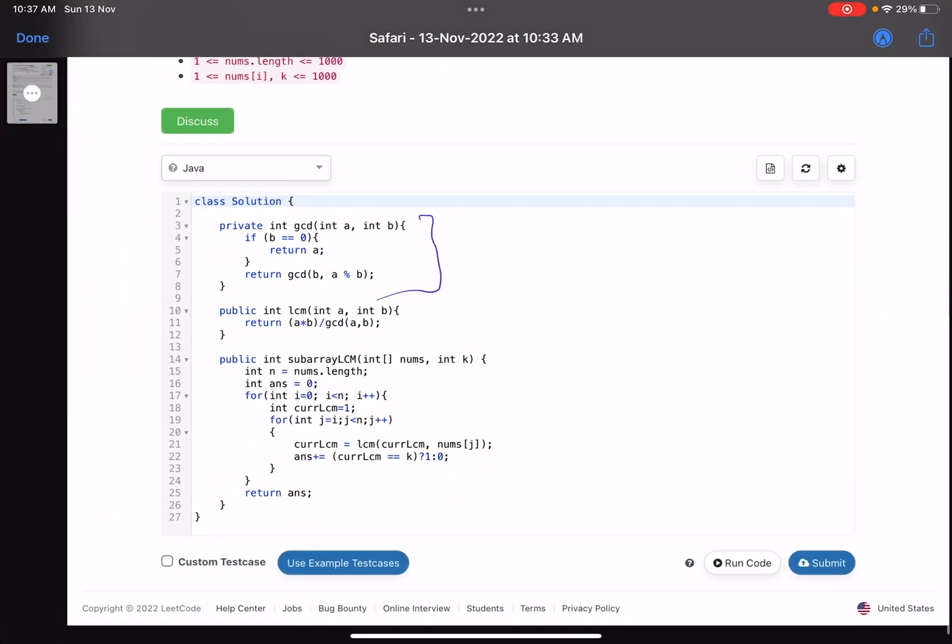This is the logic for GCD and this is the logic for LCM. The GCD logic is trivial. For LCM, I've done a × b divided by GCD(a, b) - just as I explained. Now let me explain the core logic.